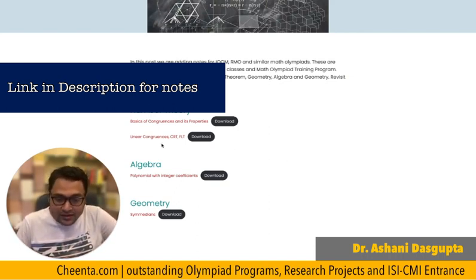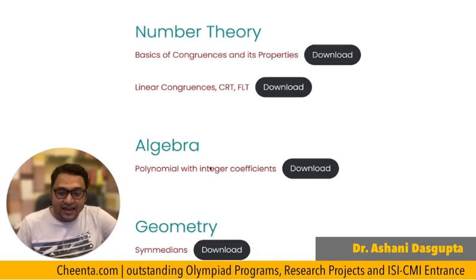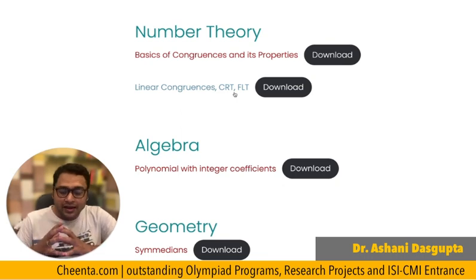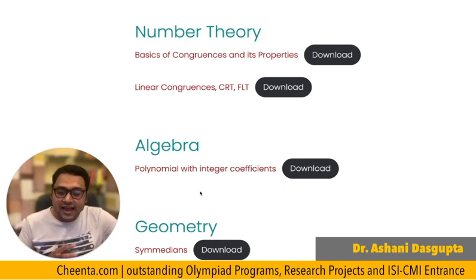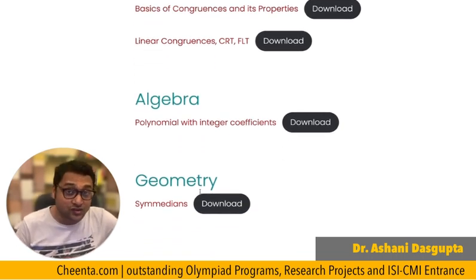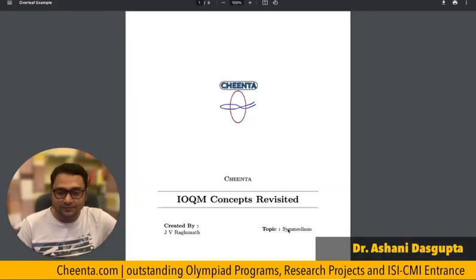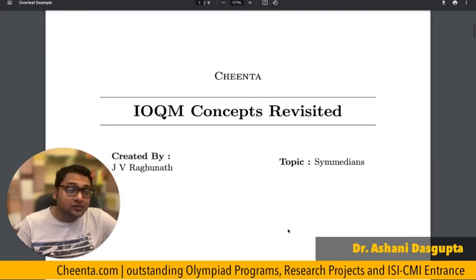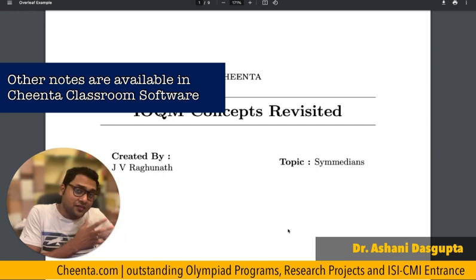In number theory, we have basics of congruences and its properties, linear congruence, CRT, and FLT — two important topics for IOQM and RMO. In algebra, we have a very nice topic: polynomials with integer coefficients. And in geometry, we have sign medians, which is a very powerful topic. Let's quickly go through one of the documents — sign medians, let's look at this. All of these documents are created by Ravunath Sir, one of our faculty members in the math olympiad training team.